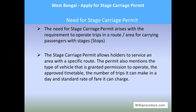Let us see the need for a stage carriage permit. A stage carriage permit is a kind of permit granted to a vehicle — particularly a bus — used to travel within a city on a local trip. In this bus, passengers buy tickets by paying a fare for the distance they travel. The bus stops at regular bus stops, called stages, where people get in and out. The need for a stage carriage permit arises with the requirement to operate trips on a route or area for carrying passengers.